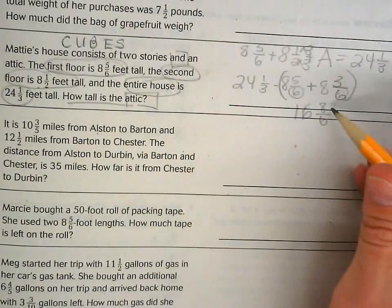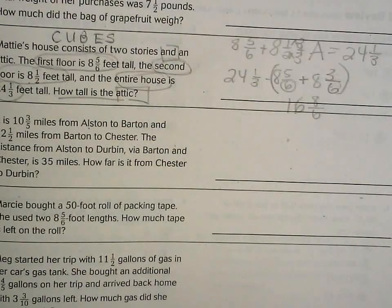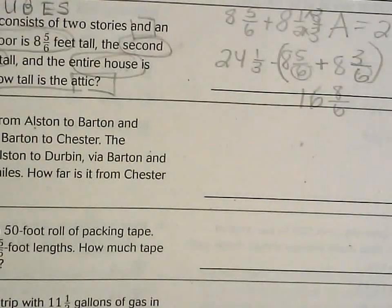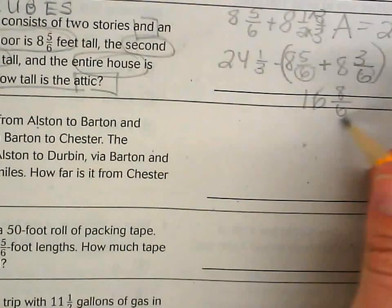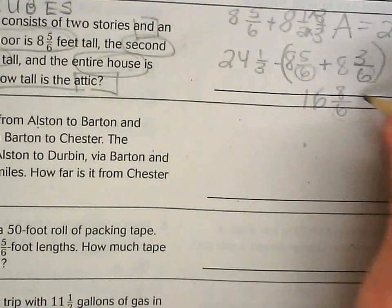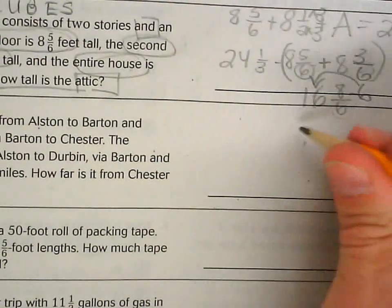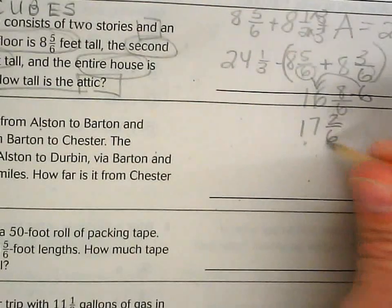Now we notice that we have almost like an improper fraction with a mixed number where my numerator is greater than my denominator. So I need to regroup the extra into my whole. I know that in terms of 6ths, 6/6 is one whole. So I'm going to subtract six and regroup it into my whole. So now I have 17 and 2/6.